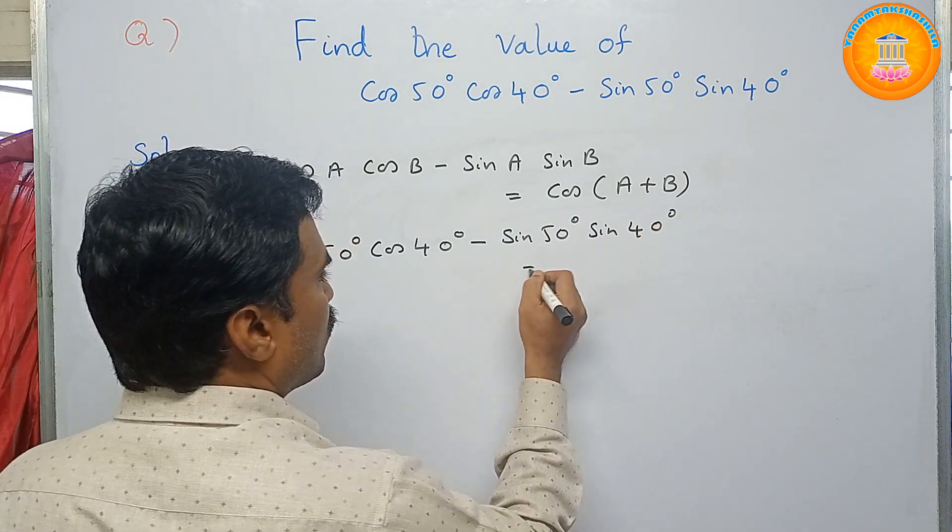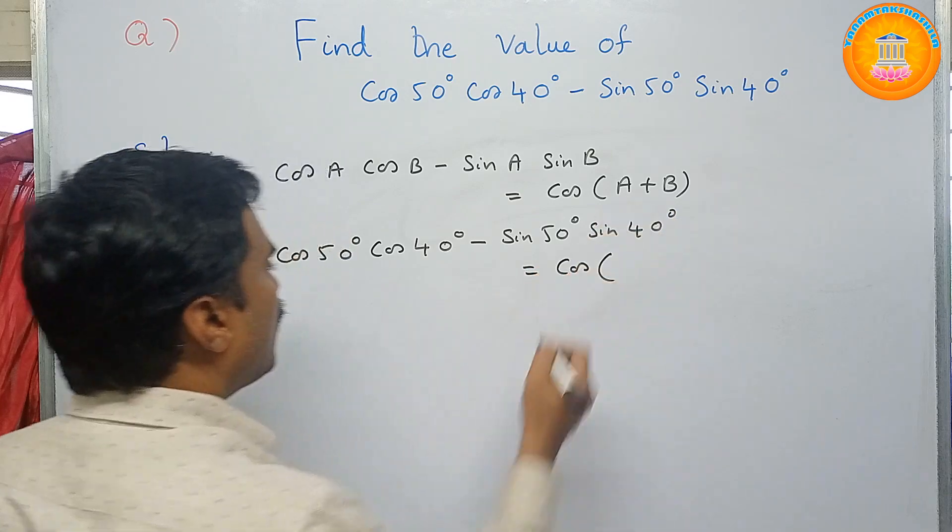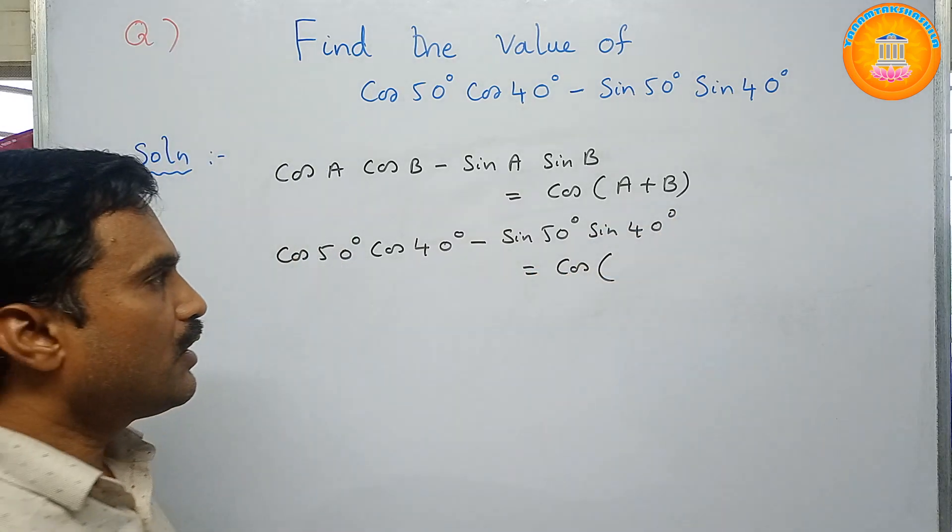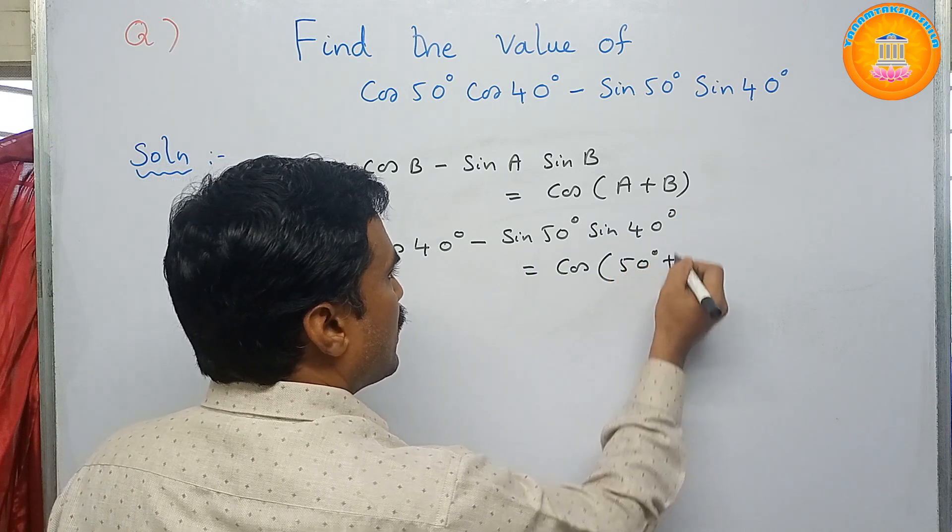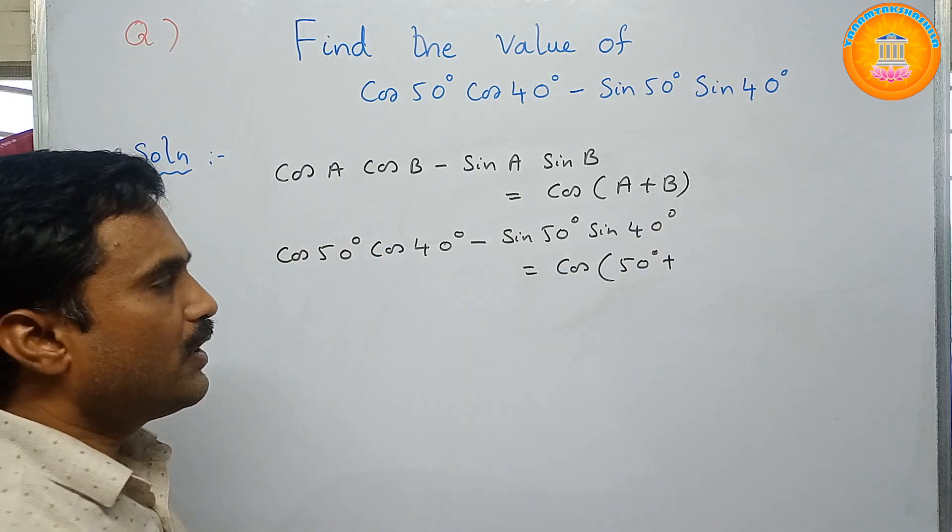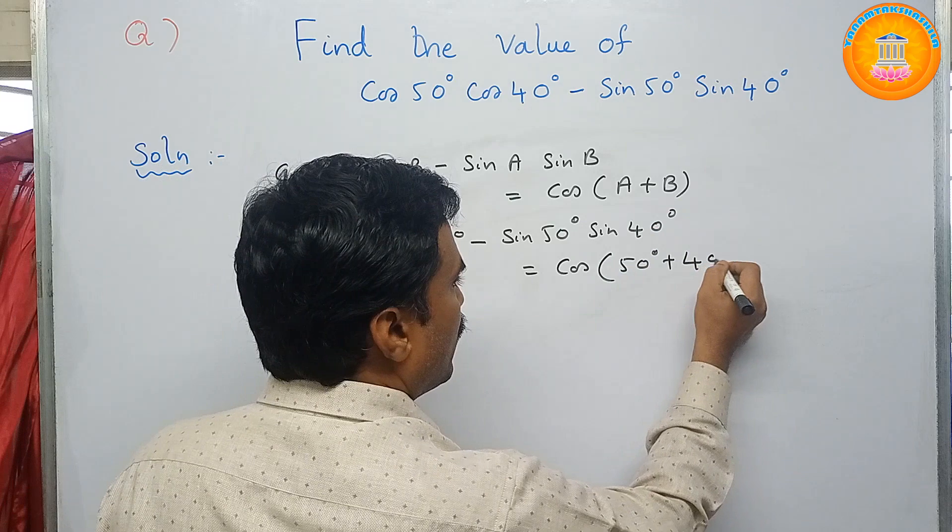So, this is equal to cos of, now in place of A, just put 50 here. So, 50 degrees plus, in place of B, just put 40 degrees. So, 40 degrees.